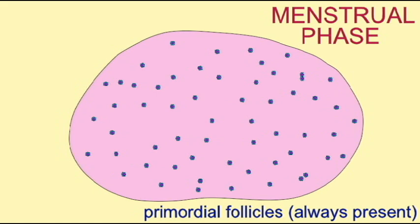Meiosis in females actually begins before birth, as oogonia divide to become oocytes, and these primary oocytes actually begin meiosis prior to birth. However, they pause during meiosis I and will stay in this paused state as primordial follicles throughout decades.